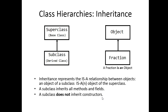Here's a really basic hierarchy diagram. Our superclass is above, our subclass is below. Our superclass is said to be our base class; our subclass is said to be a derived class. So a fraction is an object. Inheritance represents the is-a relationship between objects. A subclass inherits all methods and fields. A subclass does not inherit constructors — I'm going to repeat this a number of times.